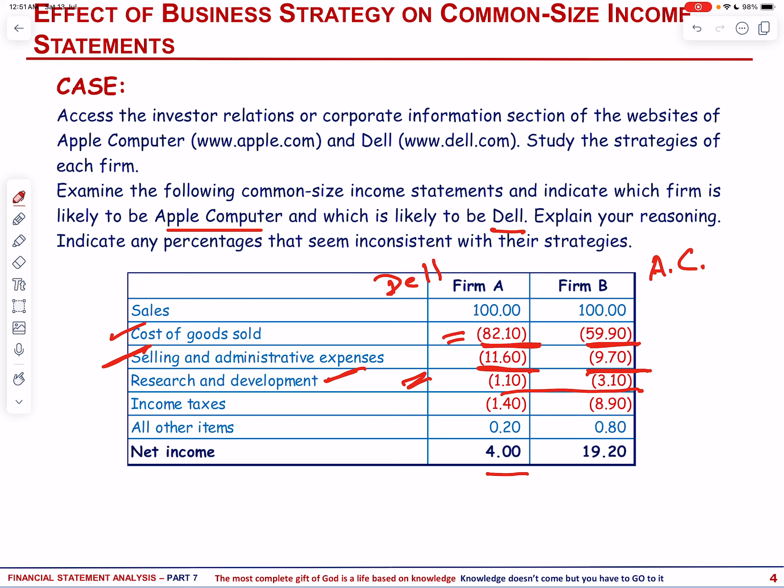Dell's R&D strategy may prioritize areas such as enterprise solutions, cloud computing, and cybersecurity, aligning with the needs of its corporate and institutional customer base. In summary, Dell's research and development strategy is tailored to enhance product performance and reliability while maintaining operational efficiencies, catering to the demands of its market segments in PCs, servers, and storage solutions. Apple's higher research and development expense to sales percentage reflects its strategic emphasis on innovation and technology leadership across its product portfolio.